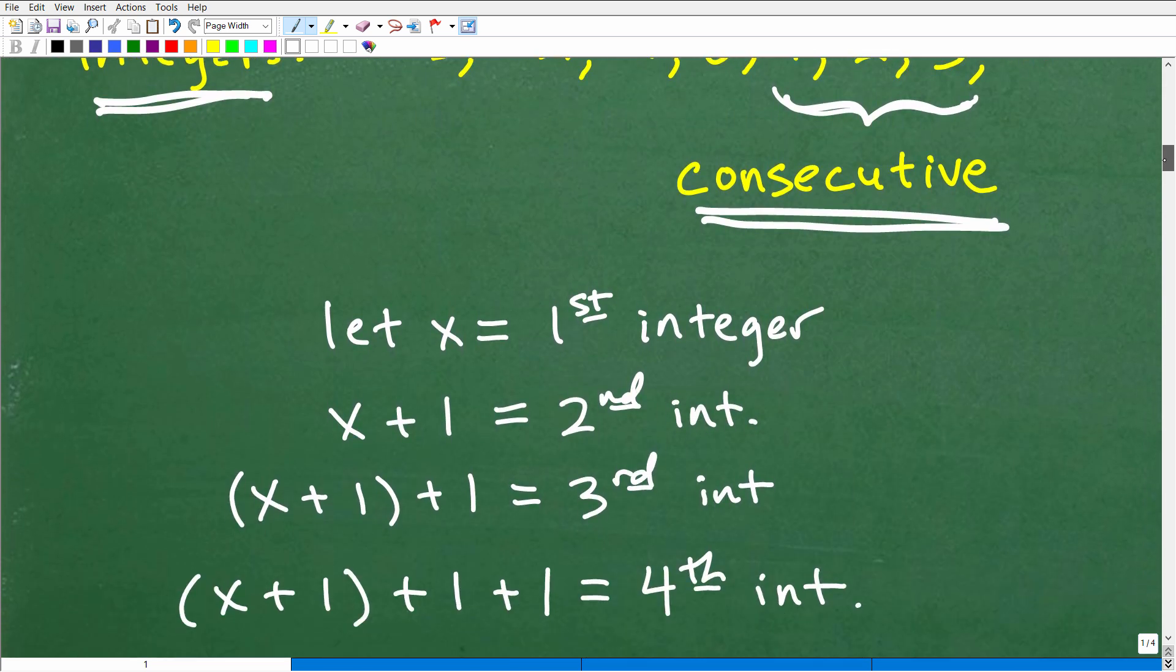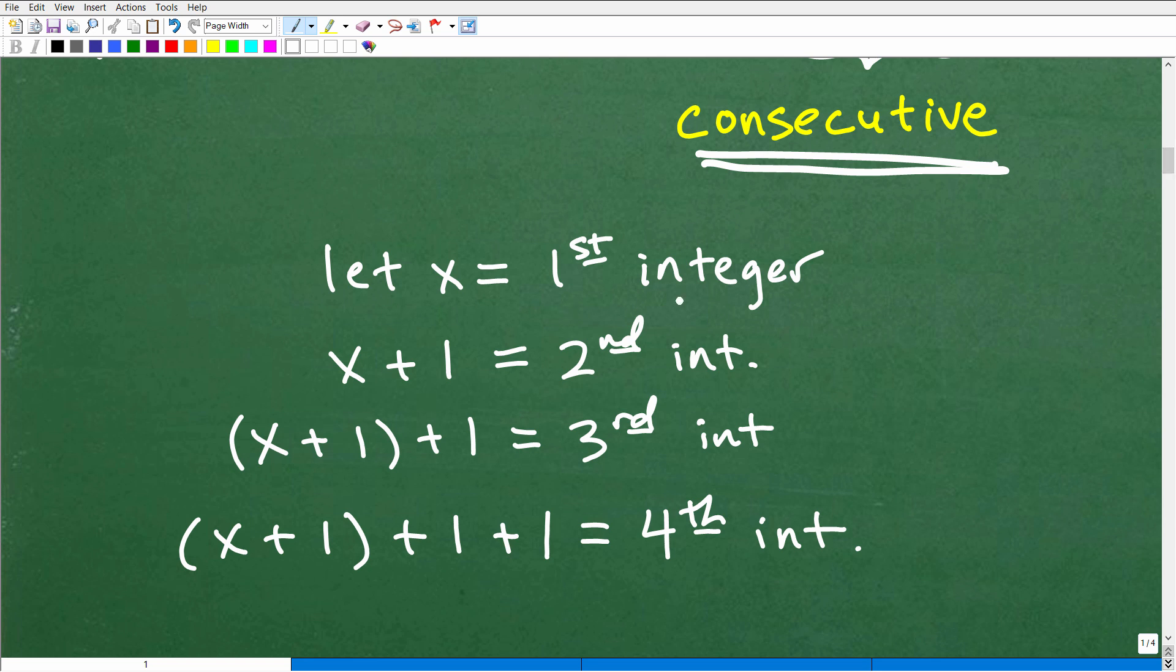So let's go ahead and get into this right now. So we're going to let x equal our first integer. We're going to establish this variable x as our first integer, whatever that might be. All I know is that if this is x, the next number right after it is x plus 1, and I need the number right after x because we're talking about consecutive numbers.